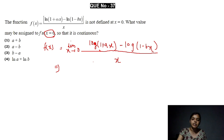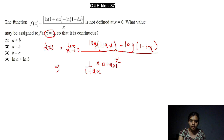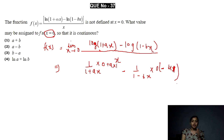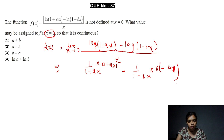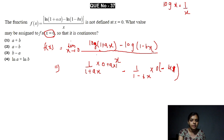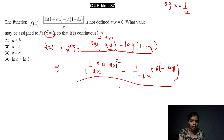Using L'Hôpital's rule, we differentiate the numerator and denominator separately with respect to x. The differentiation of log(1 + ax) gives a/(1 + ax) by the chain rule. Similarly, the differentiation of log(1 − bx) gives b/(1 − bx). So the expression becomes [a/(1 + ax) + b/(1 − bx)] as the limit x tends to 0.